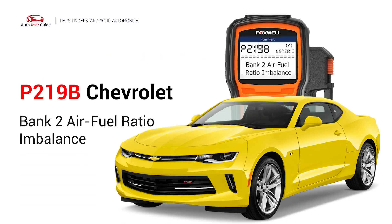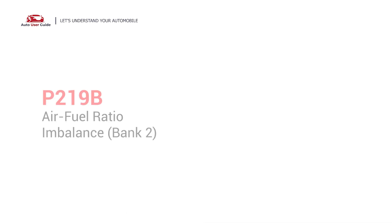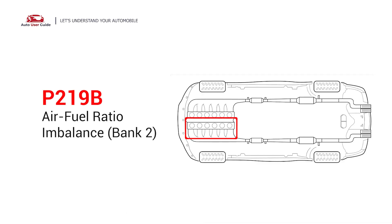This repair video for the P219B error code is specifically tailored for Chevrolet drivers. If your Chevrolet shows the P219B code, this is for you. It indicates that the PCM has detected an issue with the air-to-fuel mixture in the engine cylinders that are part of Bank 2. This imbalance can lead to performance issues and even engine damage if ignored.